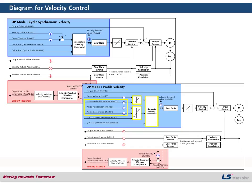There are diagrams for Velocity Control. The first one is for CSV mode, which needs the PDO update. And the second one is Profile Velocity. In this PV mode, as we said on the previous page, the drive generates the profile by itself, like this kind of profile. To make this profile, we need some different parameters.